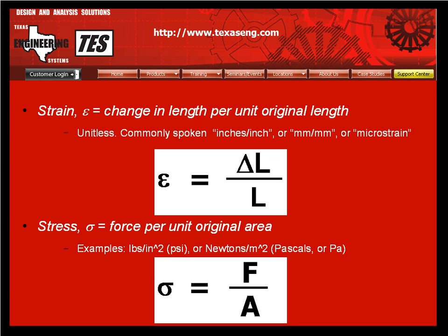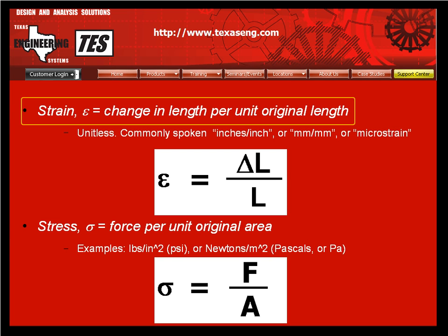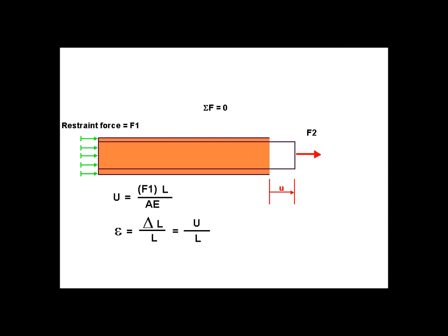Now we need to solve for the strain and the stress. The strain is just the change in length per unit original length. The term delta L in the equation is just the displacement U solved for earlier. Notice that strain has no units, but some people call it inches per inch strain, or microstrain if the change in length is measured in micro inches. So the strain is next calculated by inserting U into the strain equation.